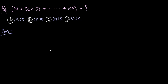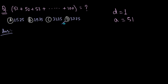Let's solve this question. These numbers are in an arithmetic progression because there is a difference of 1 between every two successive numbers. So here d is equal to 1 and a, the first term, is 51. What is asked is the sum of all these terms. First, you would need to know how many numbers there are — the total terms — then you can easily calculate the sum of the series.